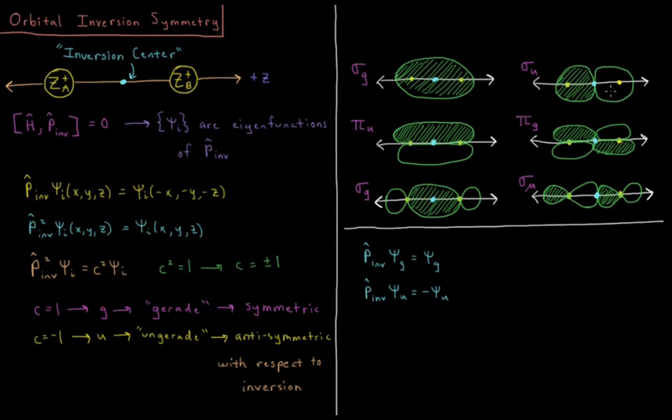Over here for psi_u, whenever I invert through the origin, I always end up on something with an opposite sign. So, inverting this orbital would result in a negative sign, so this is a sigma u.